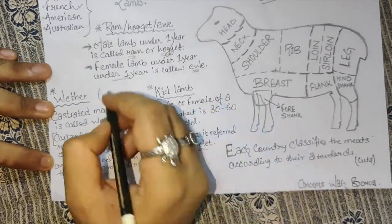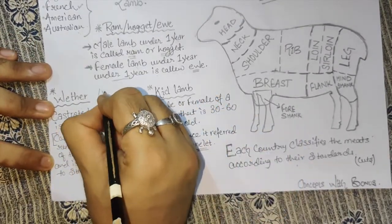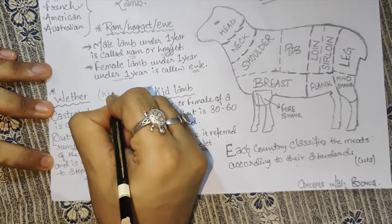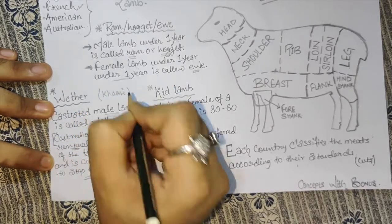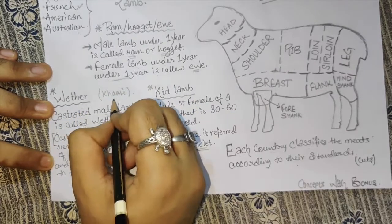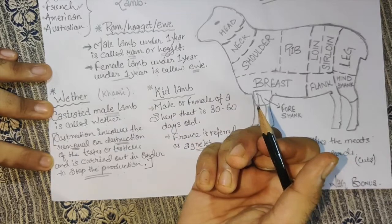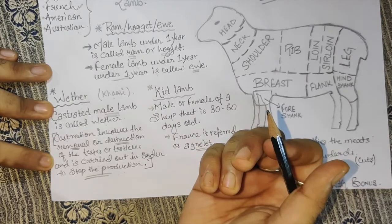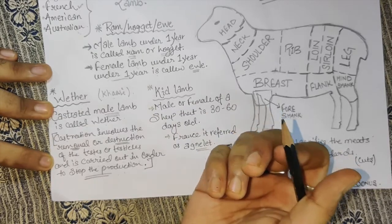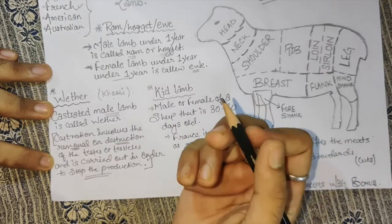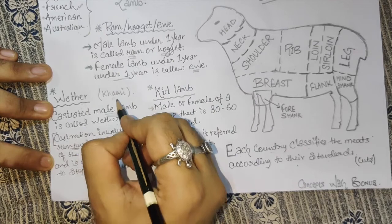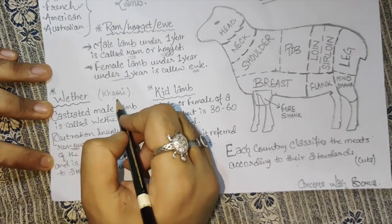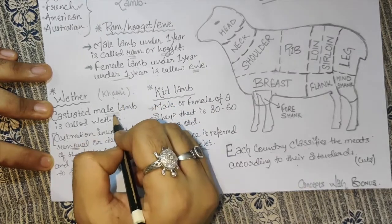In Hindi we normally call it 'Khasi.' We call it at a lamb shop or mutton shop. A Khasi is typically under one year old.